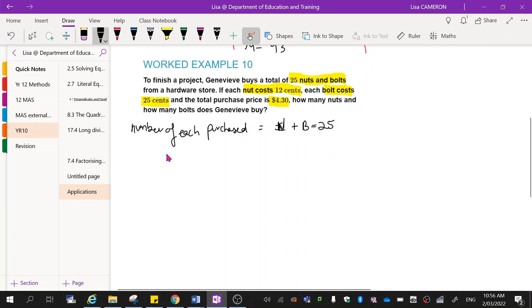If each nut costs 12 cents, and each bolt costs 25 cents. So now this is a cost function. So each nut costs 12 cents plus each bolt costs 25 cents. That gives me a total of $4.30. Okay, so I've got a number function, I've got a cost function, they have a simultaneous solution.